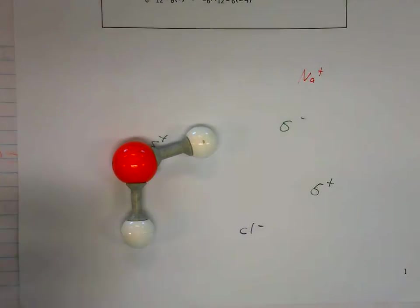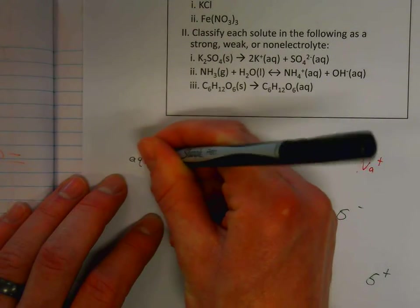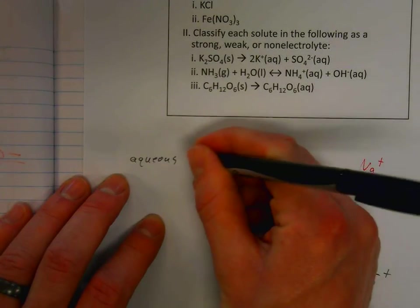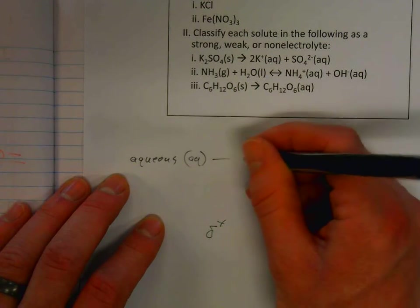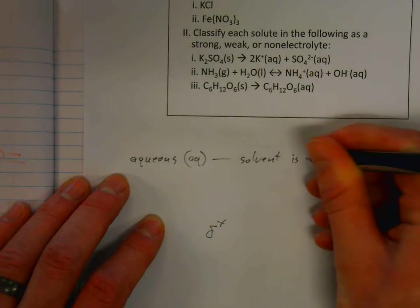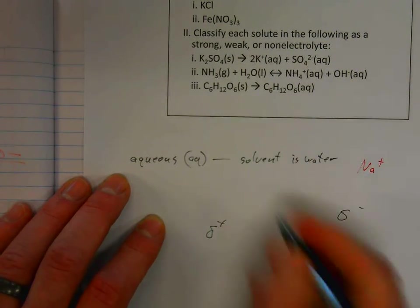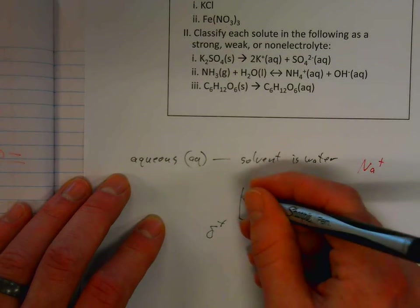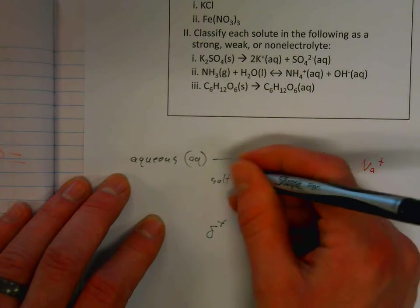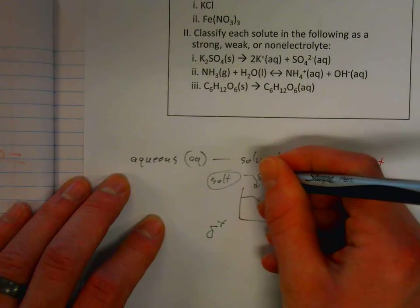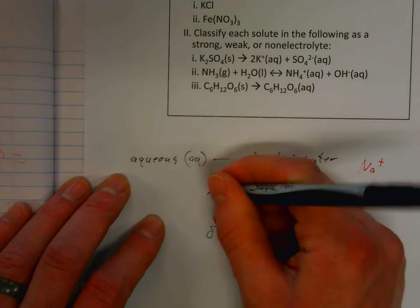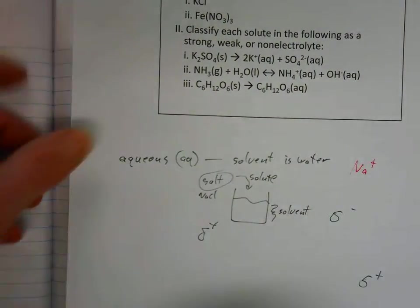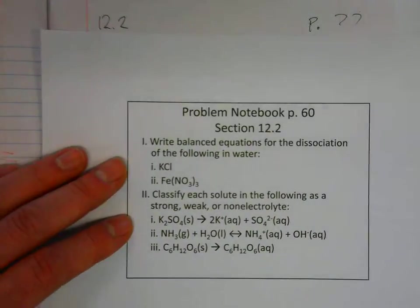This is the basic idea of how a solution forms. The term is an aqueous solution — we use 'aq' to represent a solution where the solvent is water. The solvent is what something is getting dissolved in. In salt water, salt is the solute and water is the solvent.